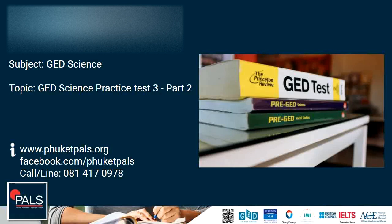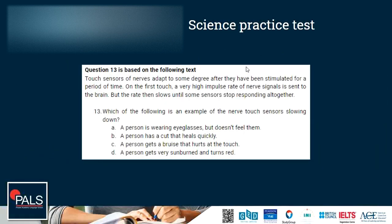We continue with question 13. Touch sensors of nerves adapt to some degree after they have been stimulated for a period of time. On the first touch, a very high impulse rate of nerve signals is sent to the brain, but the rate then slows until some sensors stop responding altogether. Which of the following is an example of a nerve touch sensor slowing down? A person is wearing eyeglasses but doesn't feel them; a person has a cut that heals quickly; a person gets a bruise that hurts at the touch; a person gets very sunburned and turns red.